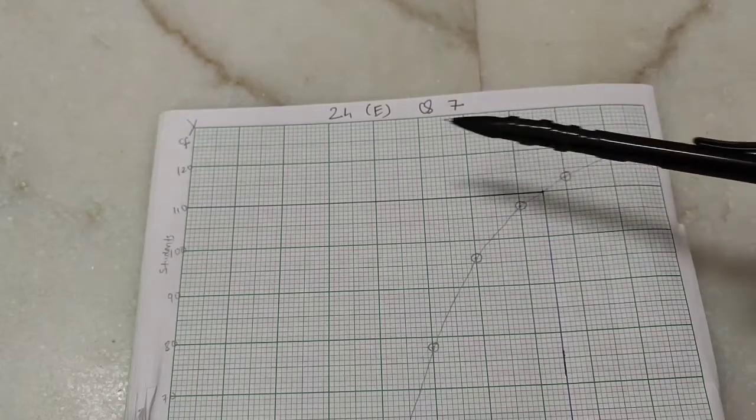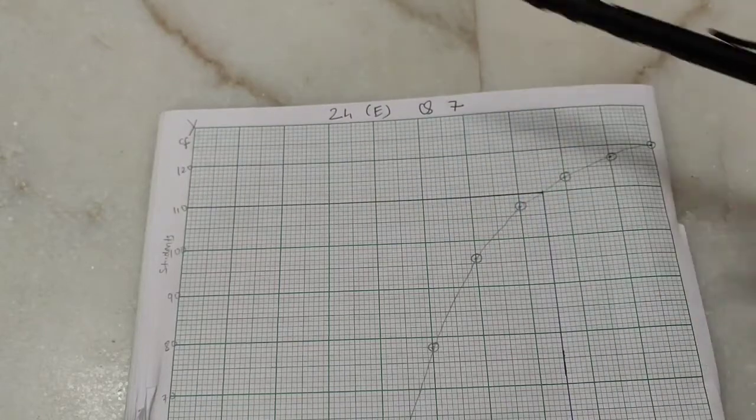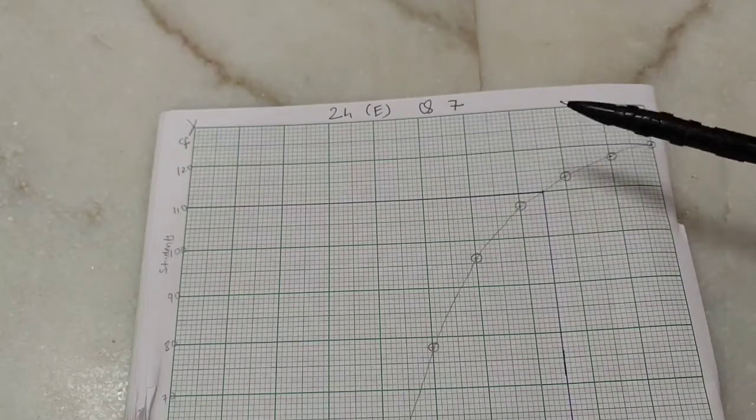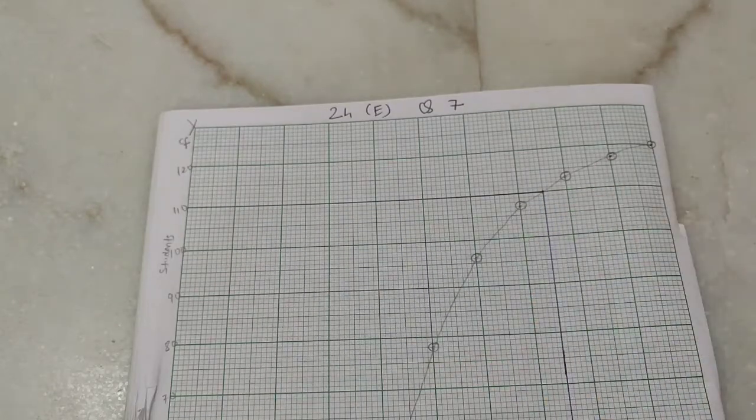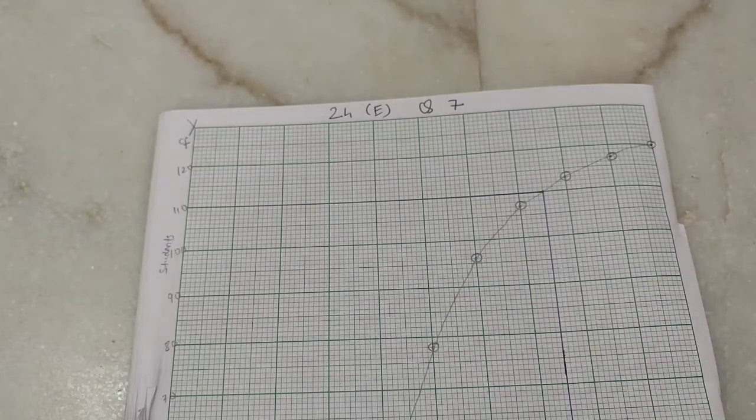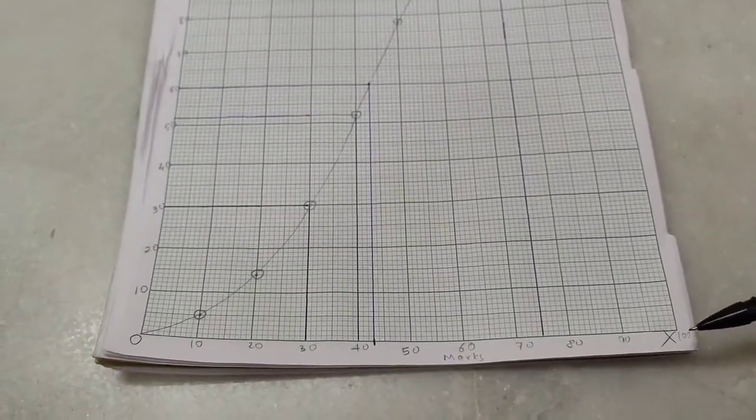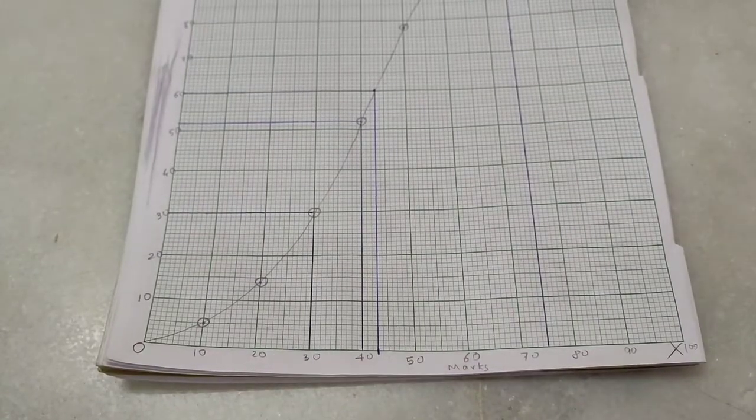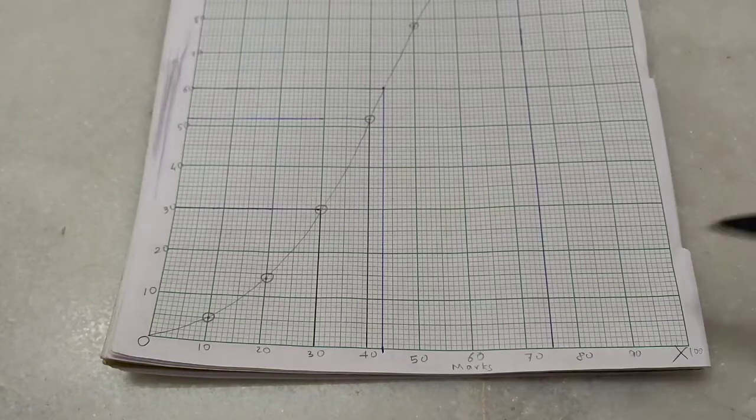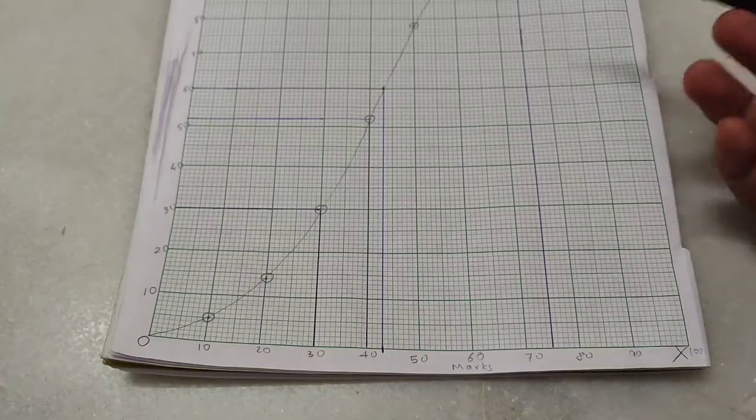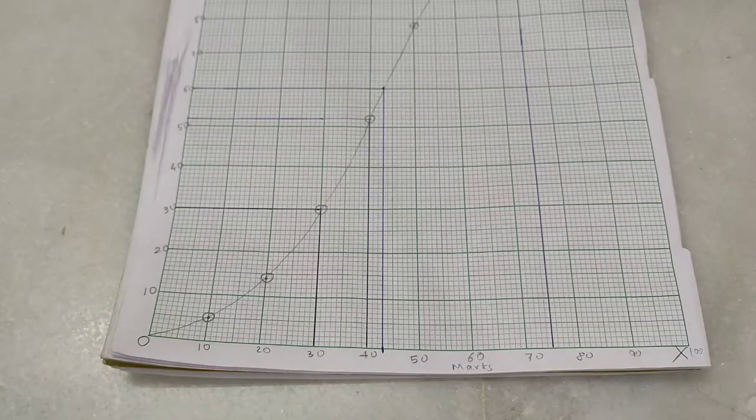So the question was how many students got more than 75 percent marks? So the answer is 10. If the question was how many students got less than 75 percent marks, then it would have been 110. But what if the total marks was not 100? What if it was 200? Then 75 percent of 200 would have been 150, so we would have started off at 150. Remember that. So the answer for roman number two is 10.